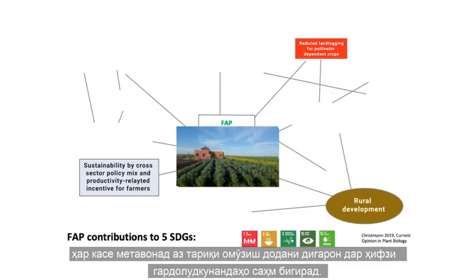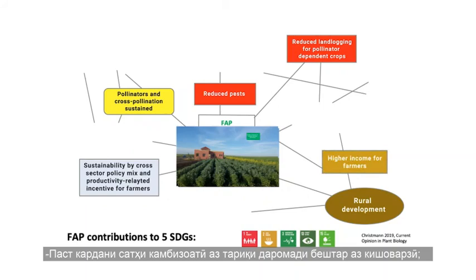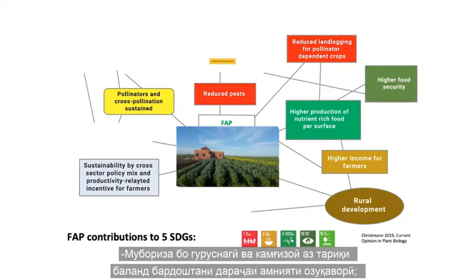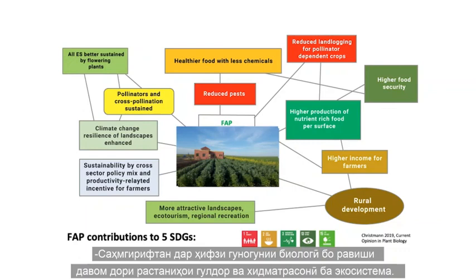In this way, FAP and pollinator protection can contribute to five sustainable development goals: combat poverty by better farm income; combat hunger and malnutrition by higher food security; contribute to health by reduced chemicals and more vitamins; contribute to climate change adaptation by sustaining cross-pollination; and contribute to biodiversity protection, sustaining flowering plants and their ecosystem services.